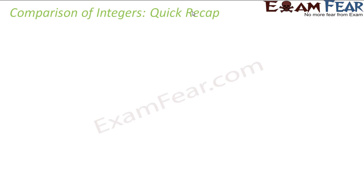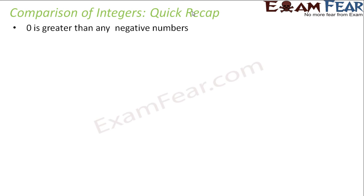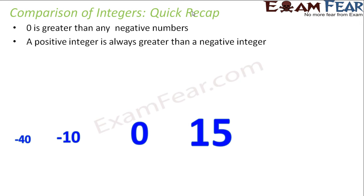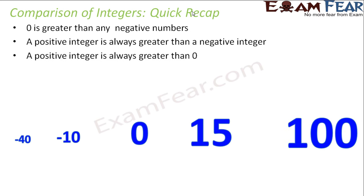Now that we have discussed comparison of integers, let's have a quick recap. We have learned that zero is greater than any negative number — it doesn't matter whether the negative number is minus 200 or minus 20,000, any negative number will be smaller than zero. A positive integer is always greater than a negative integer because on a number line, the positive integers are all located towards the right and the negative integers towards the left. Also, a positive integer is always greater than zero because all positive integers are to the right of zero.